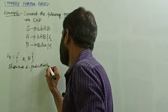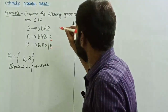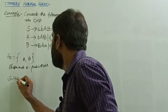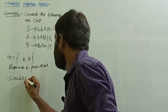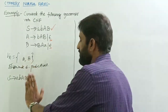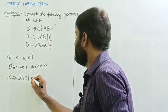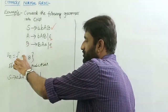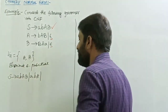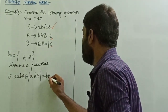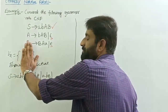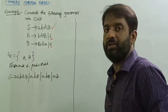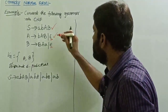Now eliminate epsilon productions. Take the first production: S tends to ABAB. B is a nullable variable — if I replace B with epsilon, what remains is AB. A is also a nullable variable — if I replace A with epsilon, what remains is AB. If I replace both A and B with epsilon at the same time, what remains is AB.